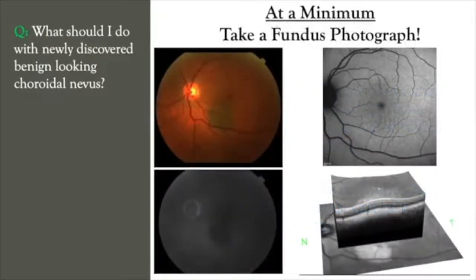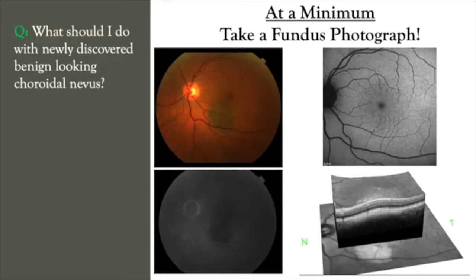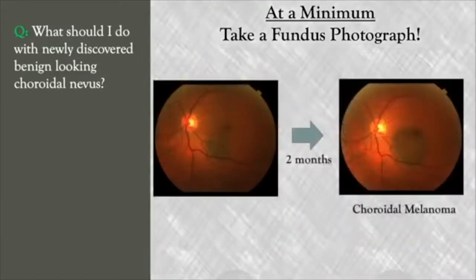This is such a case. On the top left, you see a benign-appearing choroidal nevus. On the top right, fundus autofluorescent imaging shows no evidence of orange pigment lipofuscin. On the bottom left, a fluorescein angiogram shows no intrinsic vascularity with leakage. On the bottom right, a 3D reconstruction of the OCT image shows no subretinal or intraretinal fluid in the entire volume. All this testing was done because a trusted retinal specialist felt it had grown. Just two months later, the patient returned — the tumor had grown beneath the fovea, and the beginnings of orange pigment were visible.